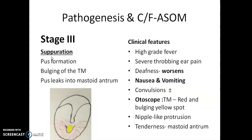Stage 3 is the stage of suppuration — pus formation takes place here. It results in bulging of the tympanic membrane outwards, and pus can also leak backwards into the mastoid antrum, a cavity behind the middle ear. The patient complains of high-grade fever, severe throbbing earache, and deafness — all symptoms from stage 2 get worse. Additional symptoms like nausea, vomiting, and convulsions may be present. Otoscopic examination shows a red tympanic membrane with a bulging yellowish spot resembling a nipple-like protrusion. Pressing on the mastoid antrum causes tenderness.